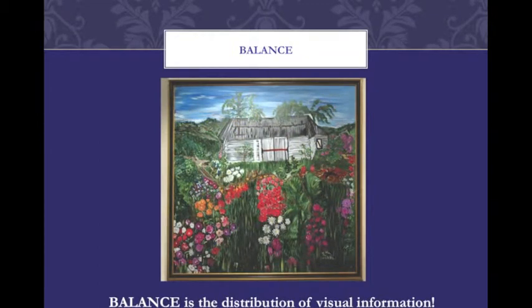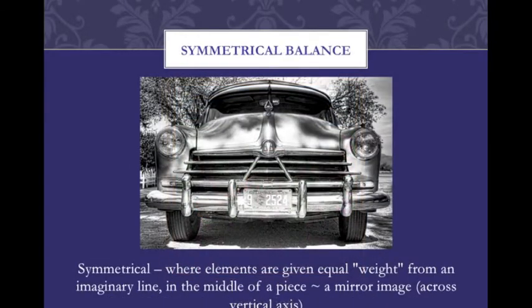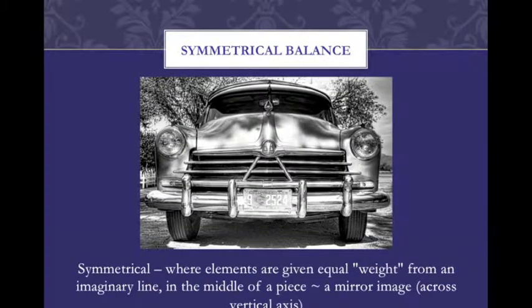Balance is the distribution of visual information. Symmetrical balance is where elements are given equal weight from an imaginary line in the middle of a piece, such as a mirror image across a vertical axis. In this photograph, if you drew a line down the middle, you would see a symmetrical element on either side — for example, how the eyes are symmetrically across from one another on a face.